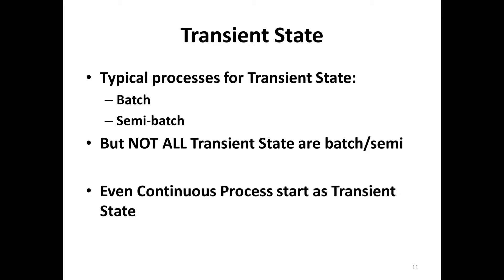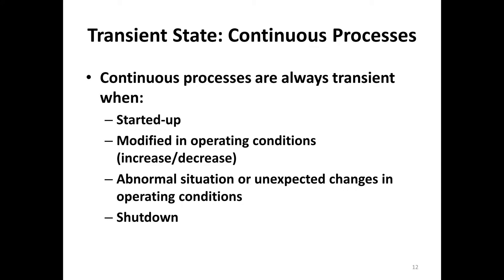The typical processes for transient state are batch or semi-batch, but we cannot say all transient processes are batch or semi-batch. Even continuous processes start as transient. If something changes in the operating conditions, or there is a disturbance or abnormal situation, we are going to have a transient period, and certainly when we want to shut a process down.